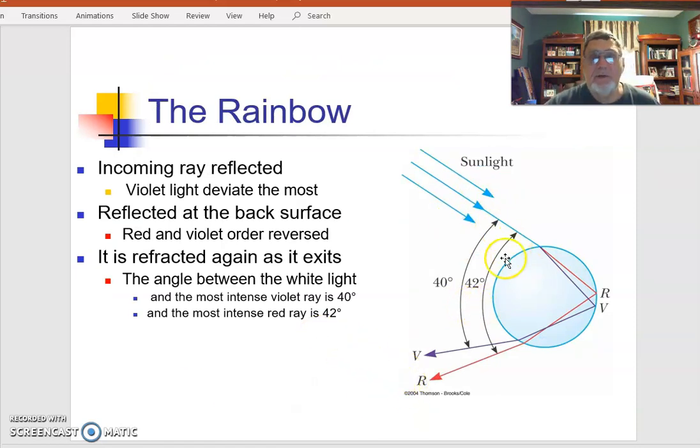The rainbow happens because we have white light coming into raindrops. It's refracted at both these surfaces, reflected at the back, and then refracted again.